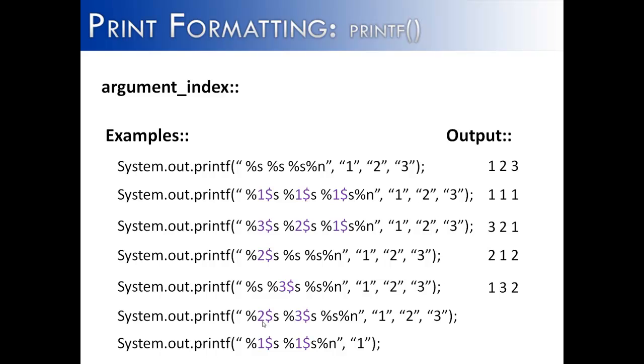This example down here starts with 2, goes to 3, so it's going to go 2, 3. And then, because this one does not have a reference, it is going to start at the beginning of the list and print 1. So we get 2, 3, 1.